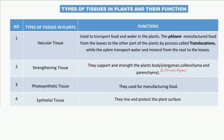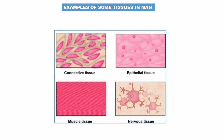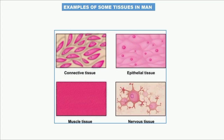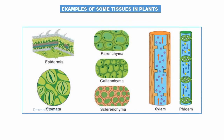Epithelial tissues line and protect the plant surface. Packing tissues provide cells for storage and new cell production. Visually, plant tissues include dermal tissues (epidermis), ground tissues (parenchyma, collenchyma, sclerenchyma), and vascular tissues (xylem and phloem).